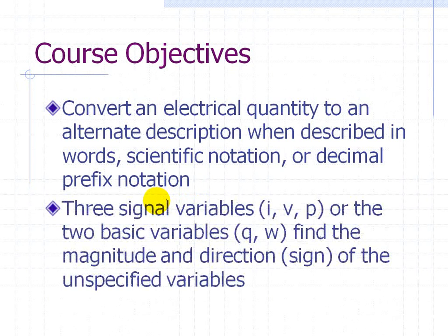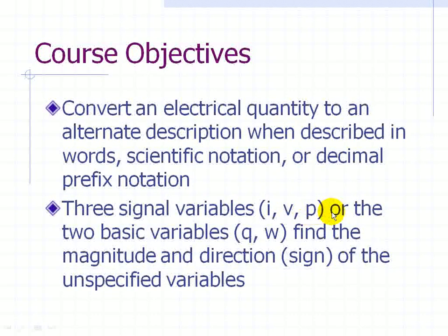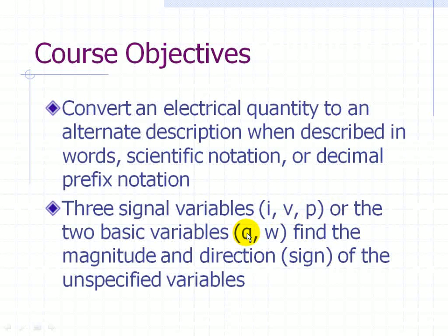For example, we can take three signal variables. Here we have I, V, P. I stands for current, V stands for voltage, and P stands for power, and we'll discuss what those terms mean later on. Then we have the two basic variables, Q and W. Q stands for charge, and W stands for energy.